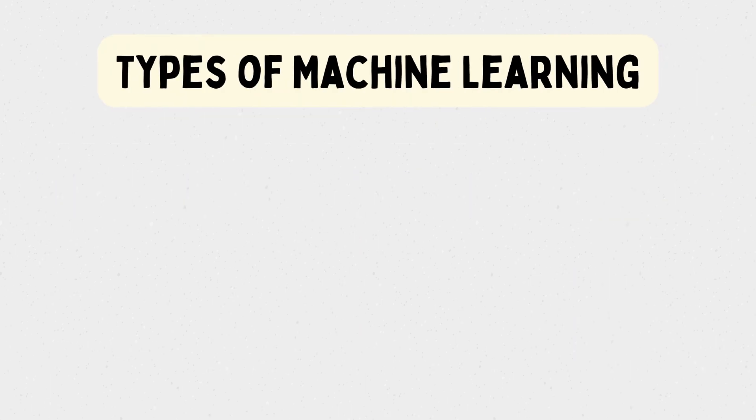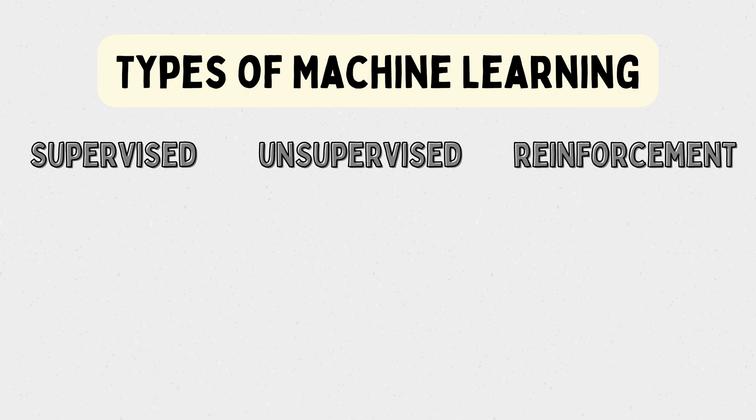There are various types of machine learning, including supervised, unsupervised, and reinforcement learning. In this introduction video, we will focus on the first two.